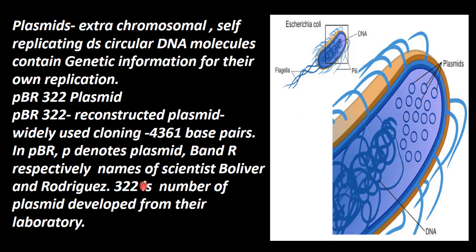There are many plasmids normally used in genetic engineering. One commonly used plasmid is PBR322. In the name PBR322, P stands for Plasmid. B and R stand for the names of the scientists Bolivar and Rodriguez. 322 is the number of the plasmid developed from their laboratory.